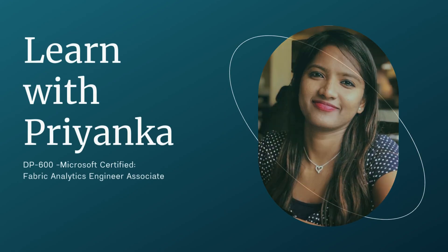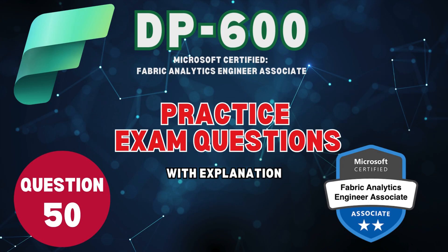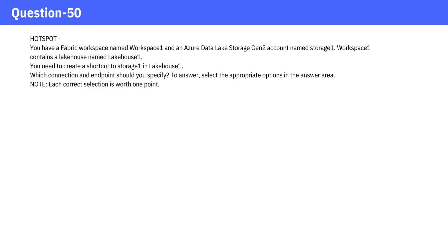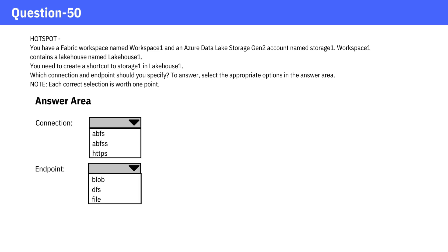Welcome to Learn with Priyanka. Question 50. You have a Fabric Workspace named Workspace 1 and an Azure Data Lake Storage Gen 2 account named Storage 1. Workspace 1 contains a Lakehouse named Lakehouse 1. You need to create a shortcut to Storage 1 in Lakehouse 1. Which connection and endpoint should you specify?